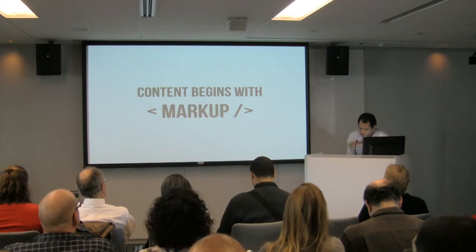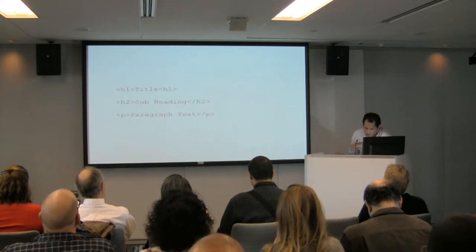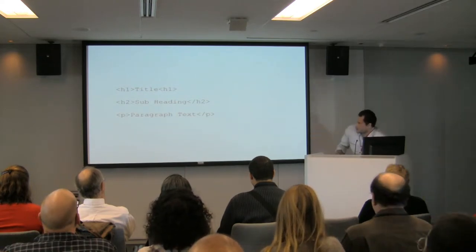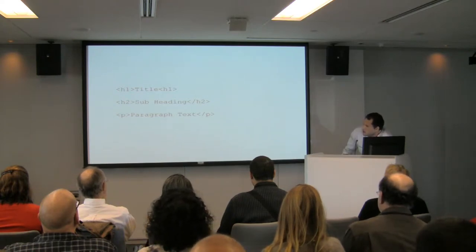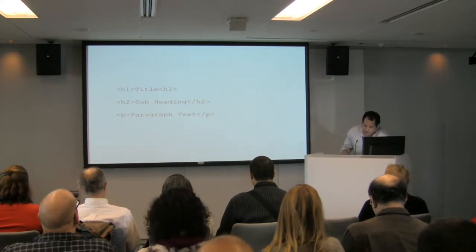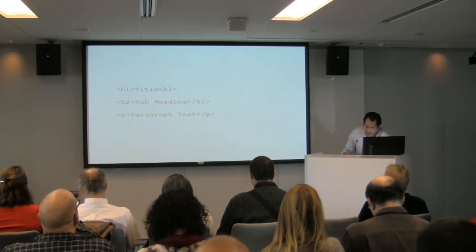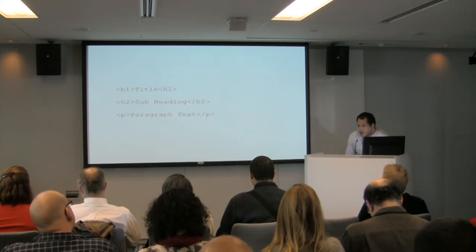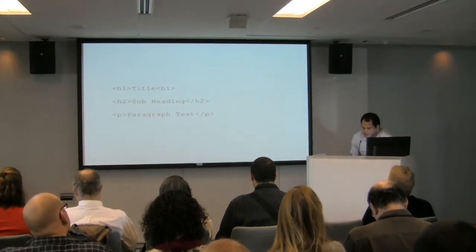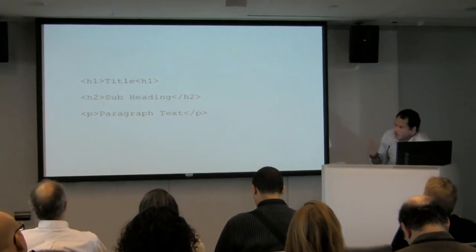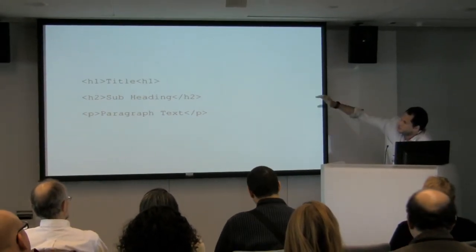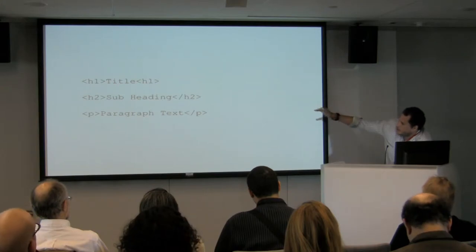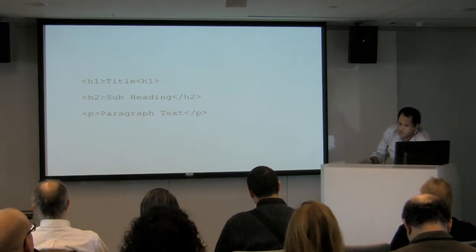For example, you have title, subheading, paragraph text. Thinking of your content in the markup is probably the most important part to start. When I start designing a site, I start with zero styles. I start with the text on the page and look at the way the text is hierarched — the most important title, subheading, paragraph — and see how all the content flows with no styles.